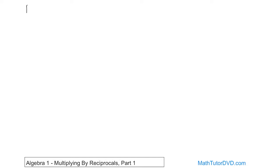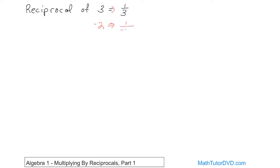So we have this concept called a reciprocal. The reciprocal of the number 3 is one-third. If you have a whole number and you're trying to take the reciprocal of it, you just stick it on the bottom of the fraction, and it's one-third. Another quick example: the reciprocal of negative 2 is going to be 1 over negative 2. The number in question just goes on the bottom of the fraction, and the reciprocal is 1 over that number.